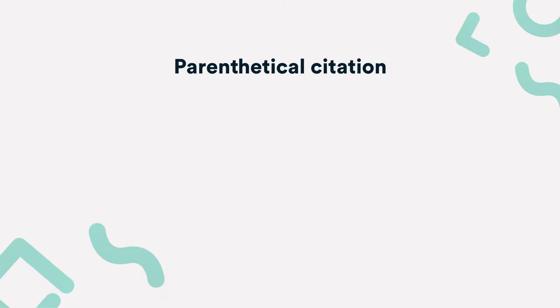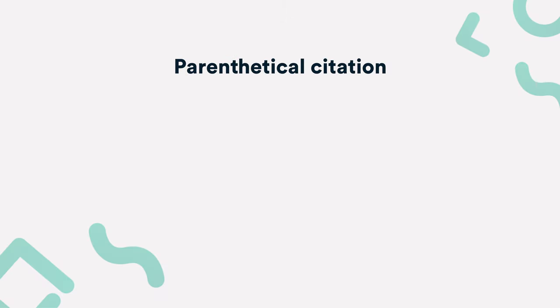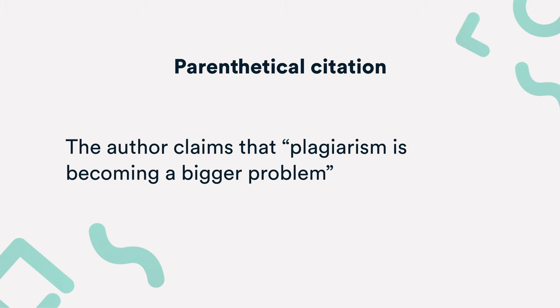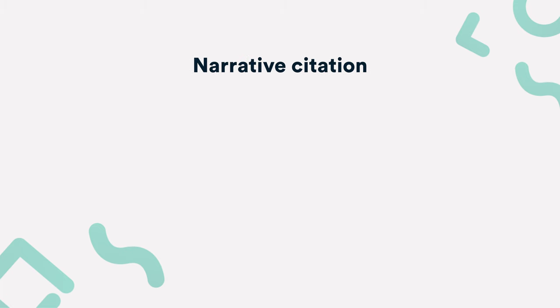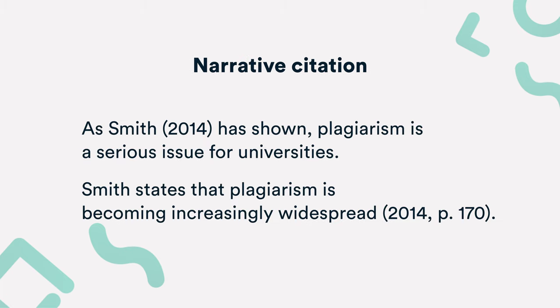There are two ways to integrate the in-text citation: parenthetical and narrative. For parenthetical citations, write the author name and the publication year within parentheses, and place it at the end of the sentence, just before the period. For narrative citations, some information is incorporated in the running text. As you can see from these two examples, the year and page number are placed within parentheses — either right after the author's name, or at the end of the sentence, just before the period.